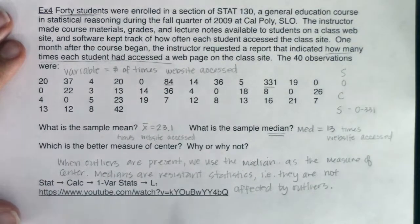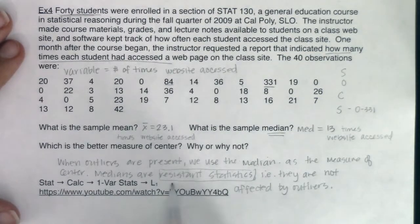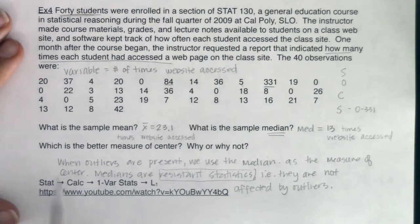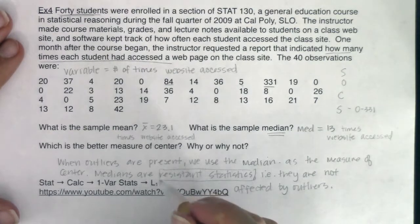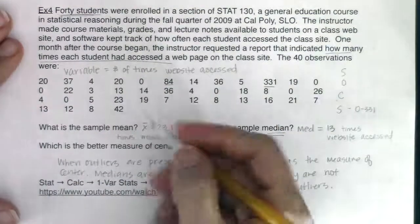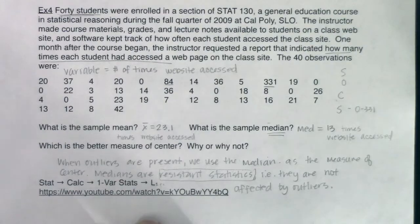When outliers are present, we use the median as the measure of center. Medians are resistant statistics — that's a new vocab term. It's defined a little bit later in the packet. Resistant statistics resist outliers — they're not affected by outliers. The median is one of them. Keep in mind the one-var stats calculator command — it will probably be the most common calculator command you use.